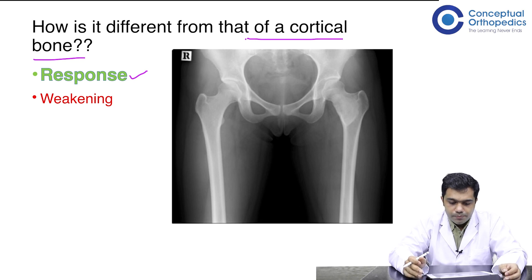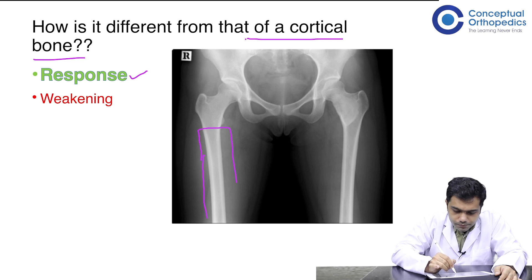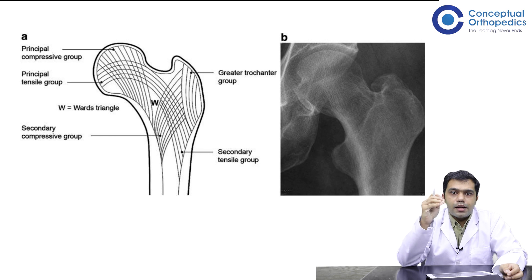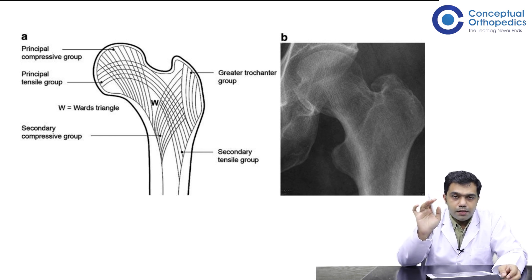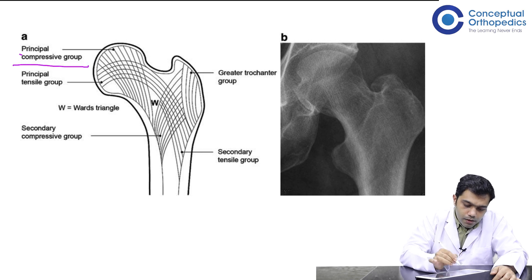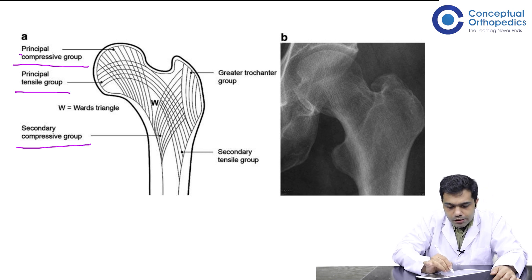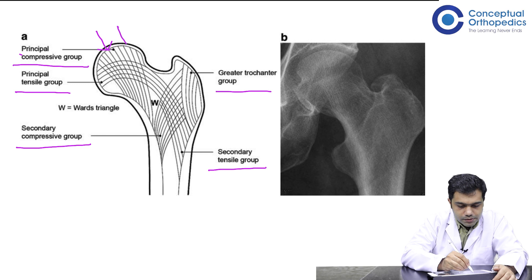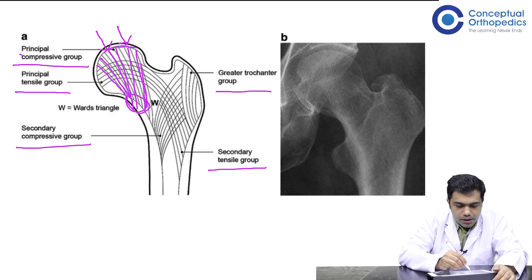You can see the cortical part and the entirely cancellous part of the bone. There are totally five groups of trabeculae in the proximal femur, formed due to different responses to loading: the principal compressive group, the principal tensile group, the secondary compressive group, the greater trochanteric group, and the secondary tensile group. The principal compressive group is the strongest — it responds to joint reaction forces, with trabeculae starting from the head of the femur superiorly going towards the calcar, which is the strongest part.